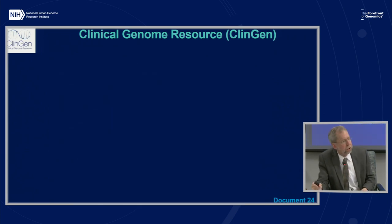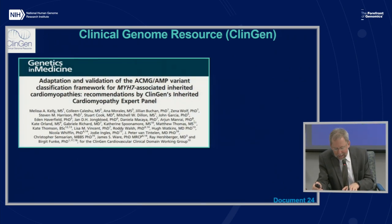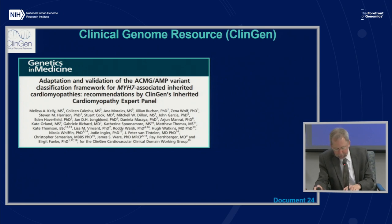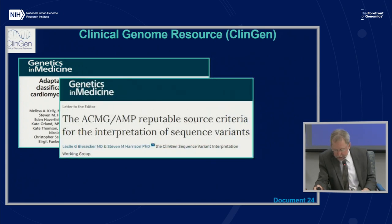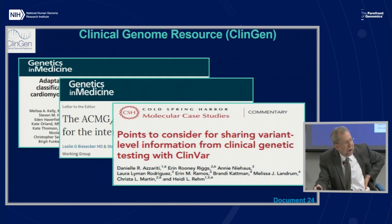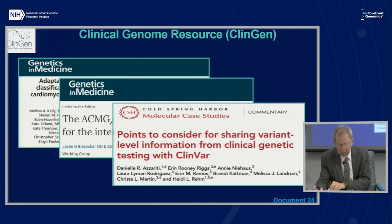Several new ClinGen papers have been published recently. The ClinGen Inherited Cardiomyopathy Expert Panel summarized their adaptation and validation of the ACMG-AMP variant classification framework for the MYH7 gene-associated inherited cardiomyopathies. The ClinGen Sequence Variant Interpretation Working Group published a letter providing rationale for the removal of two criteria from the ACMG-AMP sequence variant interpretation framework. A commentary in Cold Spring Harbor Molecular Case Studies outlined points to consider for sharing genomic variant-level information from clinical genetic testing with ClinVar.